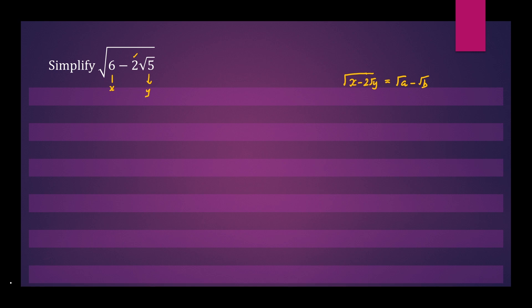So we'll start by writing our question down again. We have the square root of 6 minus 2 root 5, and we can write that as square root a minus square root b. We'll now square both sides, and this square will cancel this square root sign. So we'll have 6 minus 2 root 5 equals root a minus root b all squared.